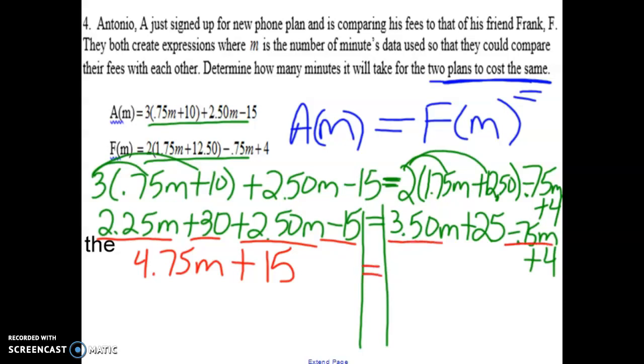Same thing over here. Let's clean this up. Let's put the 3.50 and the 0.75 cents together for 2.75m, the 25 and the 4 together for 29. So yeah, we used to call that combining like terms, but really think of it as using the commutative property to bring those terms together.